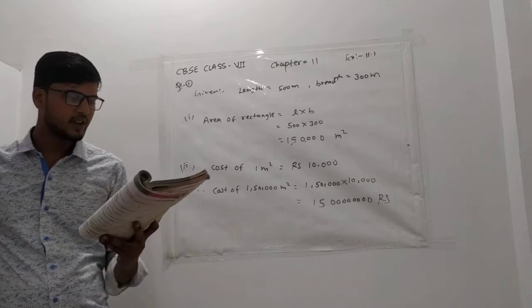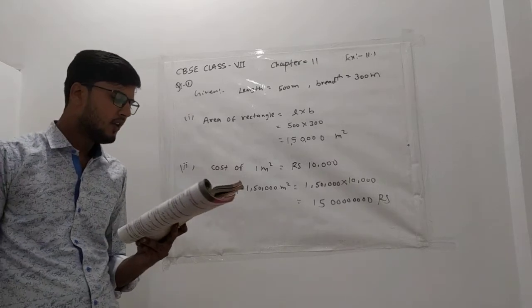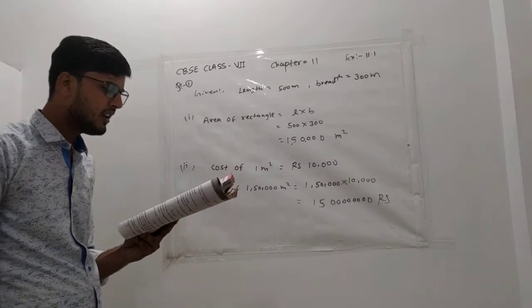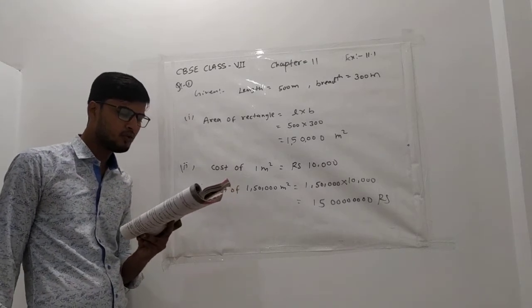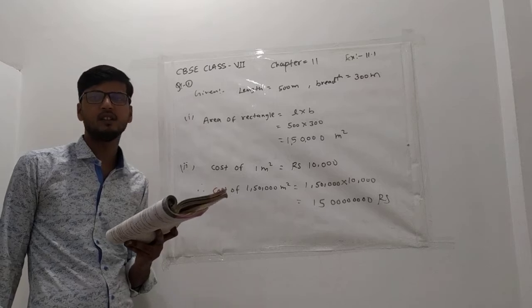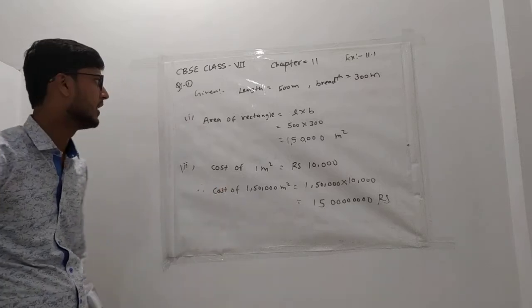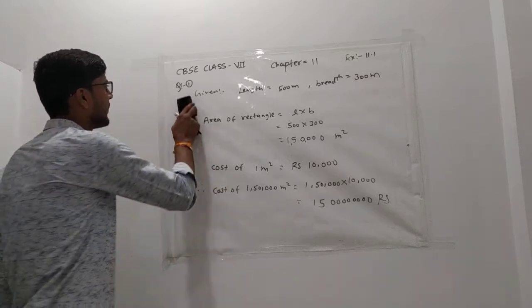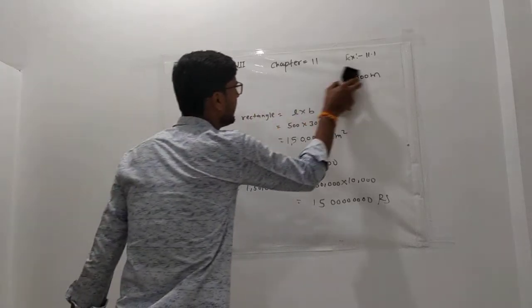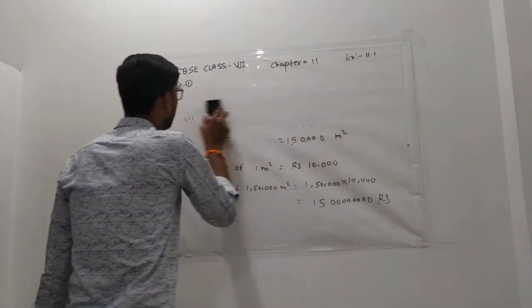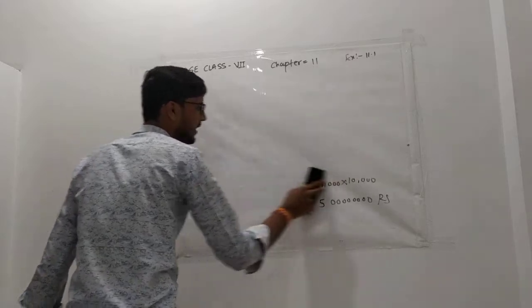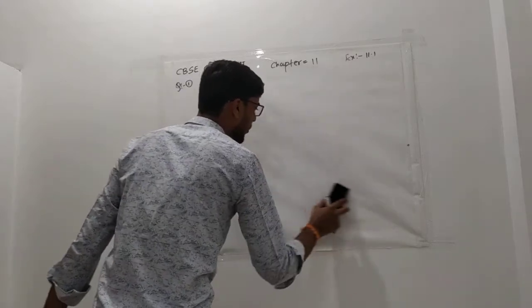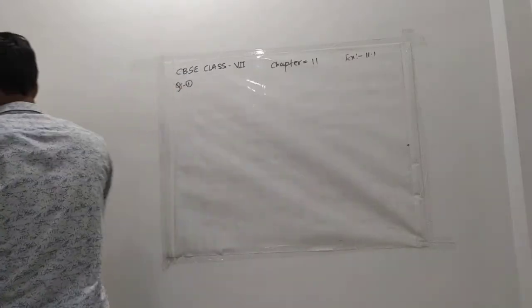Now question number two: find the area of a square plot whose perimeter is 320 meters. In this second question, the perimeter of a square plot is given, and we have to find the area.